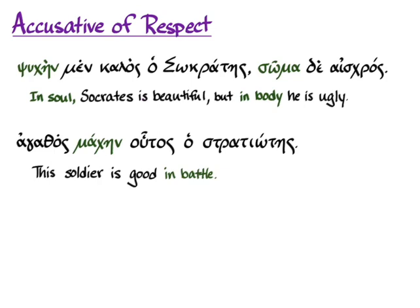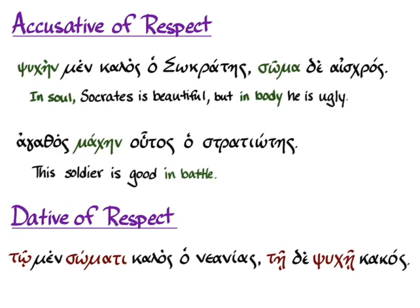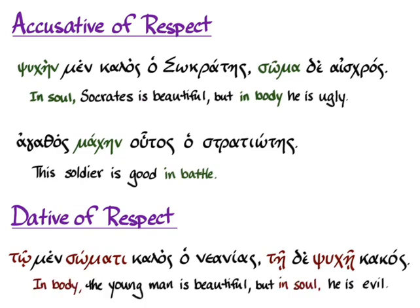This overlaps mostly with the dative of respect, and you're going to translate these things exactly the same way. When we learned the dative of respect, "to men somati kalos ho neanias, te de psuche kakos" — very similar to our Socrates sentence — means in body the young man is beautiful, but in soul he is evil.